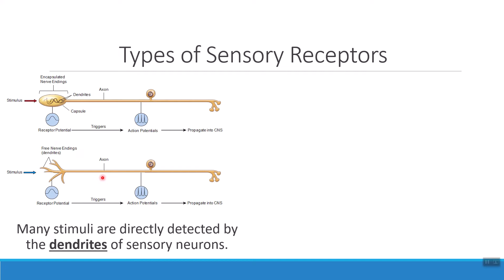One final way that we can classify receptors is based on the structure of the receptor itself. Many of the receptors that we're using to detect sensory information — we're actually detecting it straight onto a neuron. Remember that the dendrites of my neurons were the receiving parts. If I have just a regular free nerve ending where I see all of my little dendrites branching, that's one example of directly collecting that information. Sometimes we'll also protect those dendrites in a little capsule — things like my Pacinian corpuscle or Meissner's corpuscle, where we wrap those dendrites up in some lipids to keep them safe.